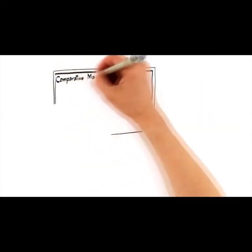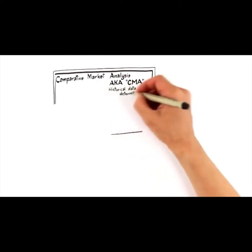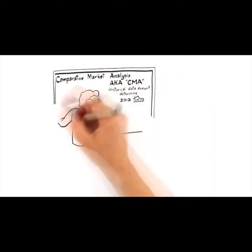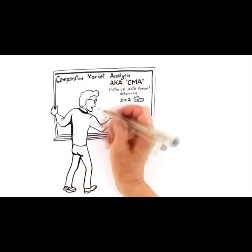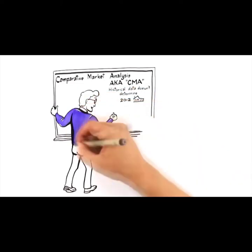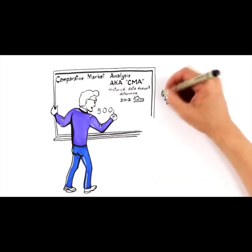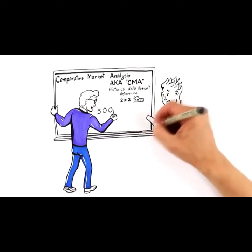Let's start with number one, pricing expertise. Traditionally, agents price homes using what is called a comparative market analysis, also known as a CMA. This establishes the value of your home by comparing it to historical sales.